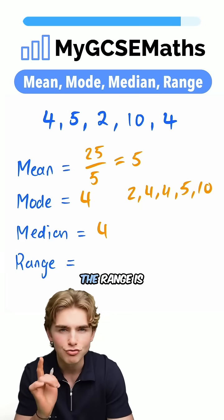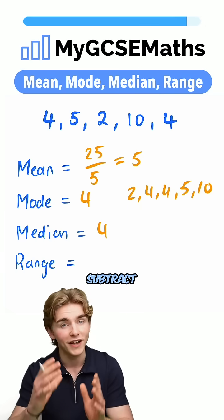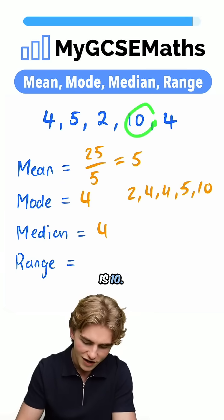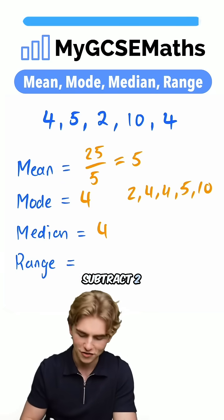Finally, the range. The range is going to be the biggest number subtract the smallest. Biggest number is 10. Smallest is 2. 10 subtract 2 is going to be 8.